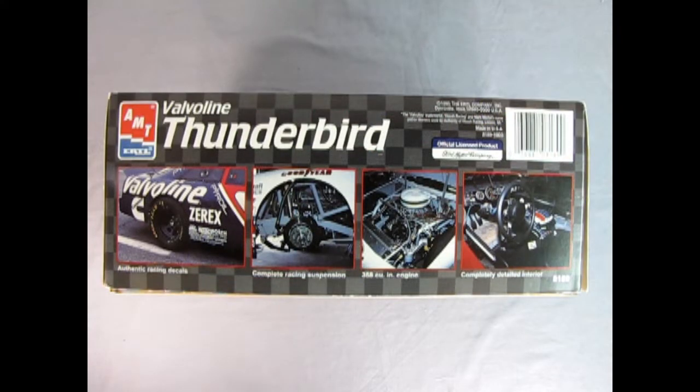On this side of the box we get some wonderful photographs of the Valvoline Thunderbird. It has authentic racing decals, complete racing suspension, a 358 cubic inch engine and a completely detailed interior.